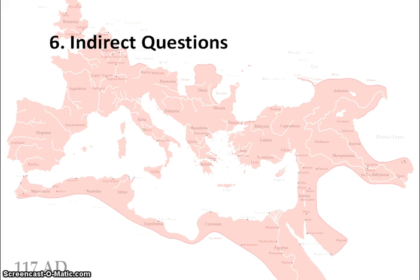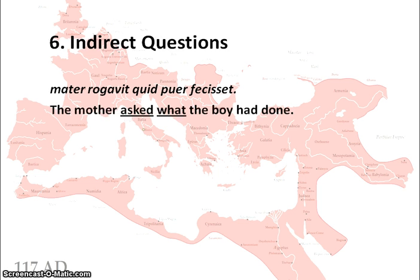The final use of the subjunctive is an indirect question. Like an indirect command, it is a reported question rather than a direct one. For example: 'mater rogavit quid puer fecisset' — the mother asked what the boy had done. The original direct question was 'what did the boy do?', but now it is reported, so we have 'the mother asked what the boy had done.'